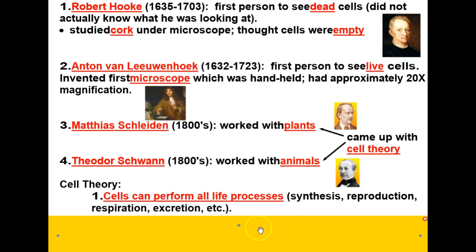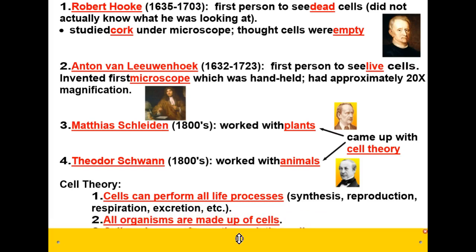The second main point of the cell theory is that all organisms are made up of cells — whether they are single-celled, like some of the pond creatures you saw earlier in the course, or multi-celled like us. All organisms are made up of cells.